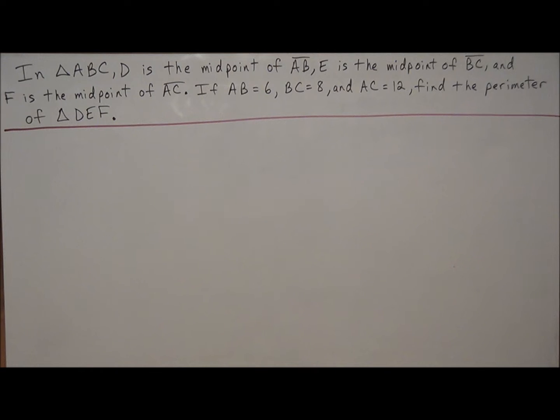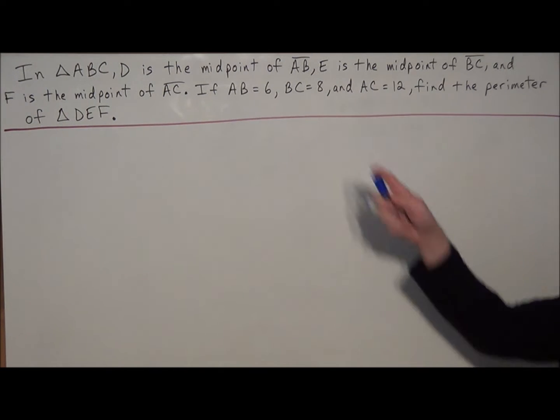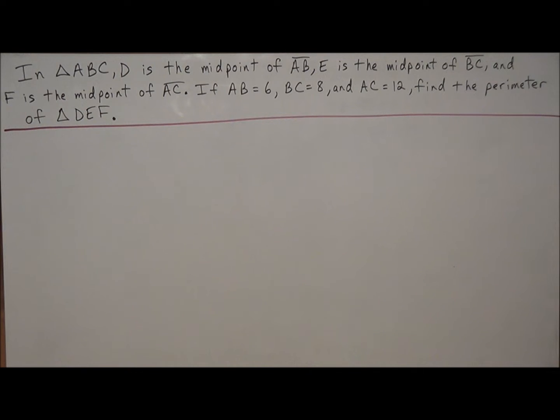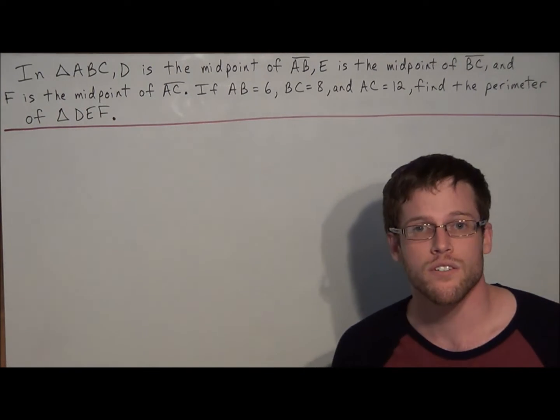So we have in triangle ABC, D is the midpoint of AB, E is the midpoint of BC, and F is the midpoint of AC. If AB equals 6, BC equals 8, and AC equals 12, find the perimeter of triangle DEF.